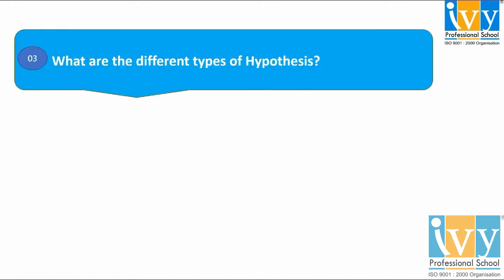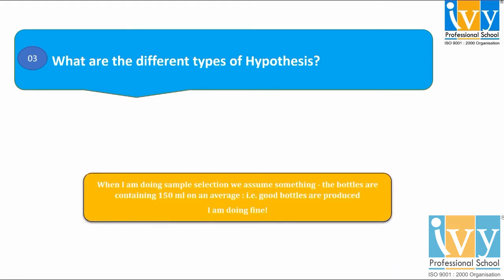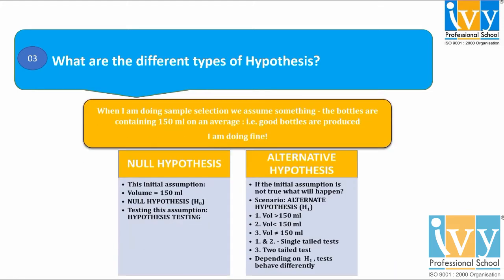The third question asks: what are the different types of hypothesis? There are two types — null hypothesis and alternative hypothesis. A null hypothesis is denoted by H0. A null hypothesis proposes that there is no difference between certain characteristics of a population.